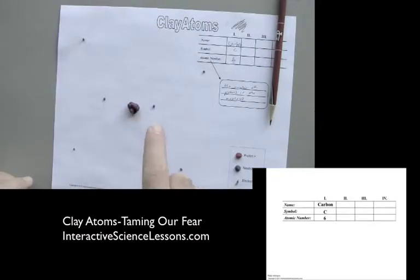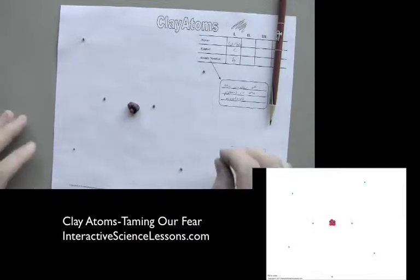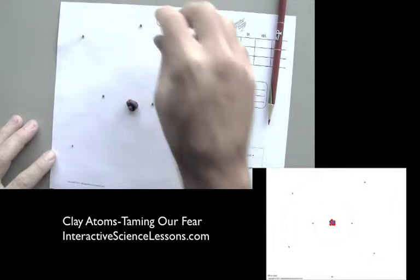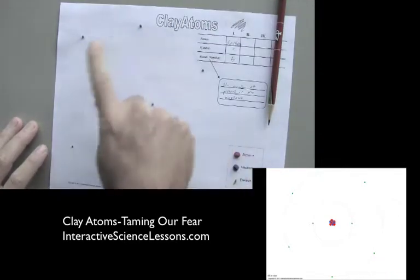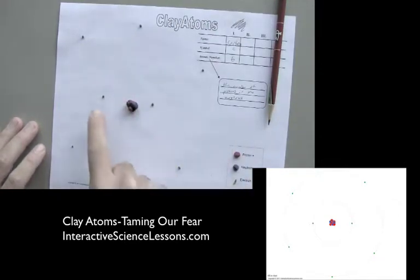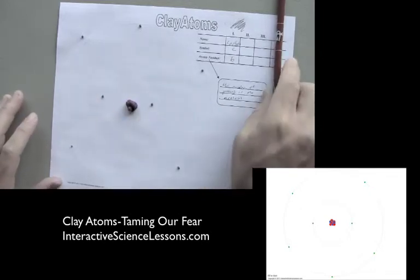Six—wait, seven protons, seven neutrons, and six electrons? That doesn't sound quite right. That's right. So now we're going to put electron number seven out there: one, two, three, four, five, six, seven. And now the atom is complete: seven, seven, and seven.